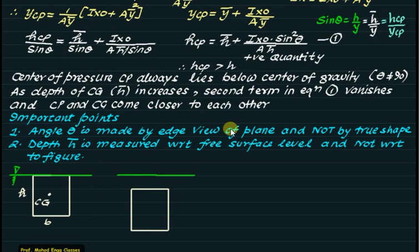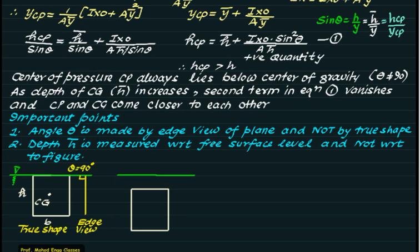To illustrate: consider a rectangular plate. The true shape shows height h and width b with the center of gravity clearly visible. If the plate lies horizontal, rotating it 90 degrees gives an edge view making theta = 90°. For a rectangle, the centroid is at h/2 from either edge, so if the top edge is at the free surface, h-bar = h/2.